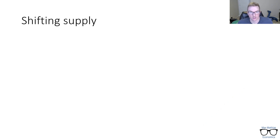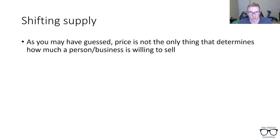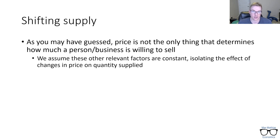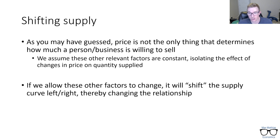So let's talk about shifting supply. Price isn't the only thing that determines how much a person or business is willing to sell. What we have been assuming so far is that other relevant factors are being held constant, so we are isolating the effect of changes in price on quantity supplied. As soon as those other things change, it shifts the supply curve — to the left or to the right — thereby changing the relationship.